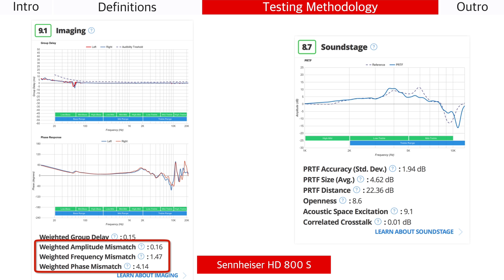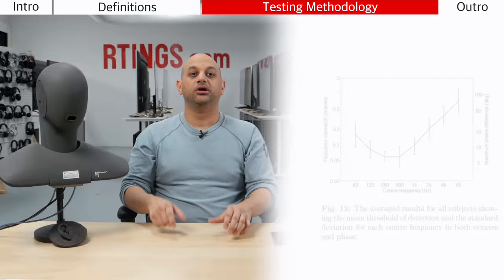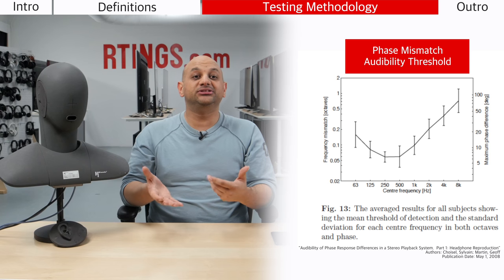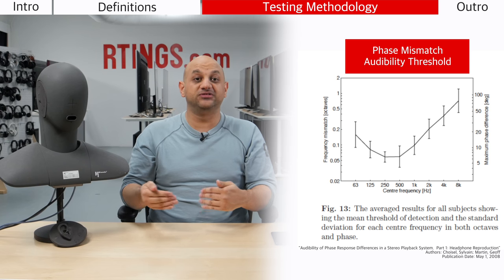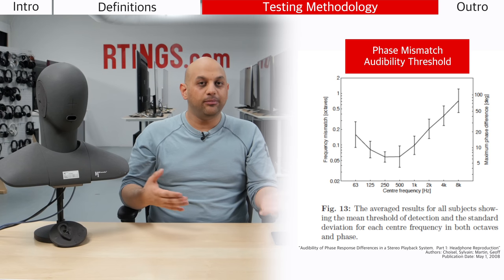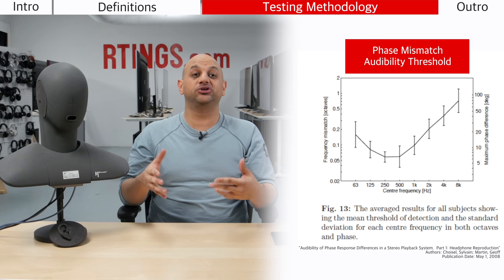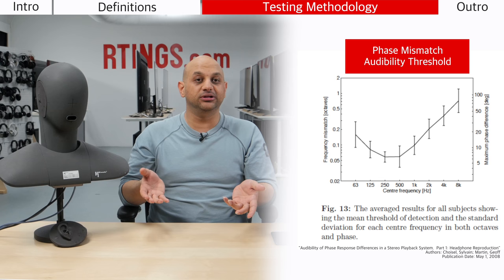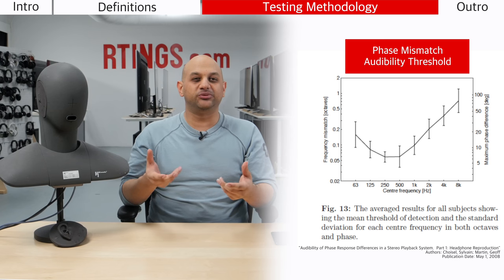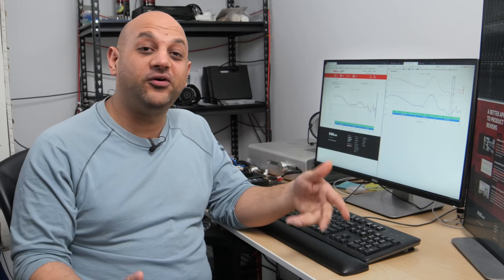For amplitude mismatch, we calculate the average difference in amplitude between the left and right drivers. For frequency response mismatch, we calculate the standard deviation of one channel's frequency response against the other. For phase mismatch, we calculate the standard error of one channel's phase response against the other, and we've also included a weighing filter based on the phase mismatch audibility paper by Jeff Martin to help our scores match human perception better.